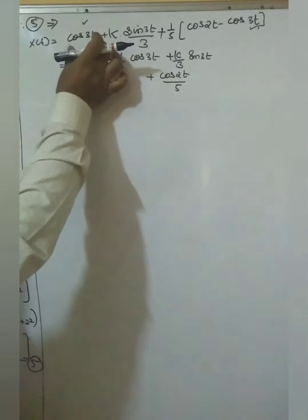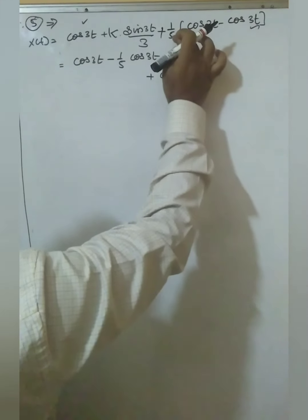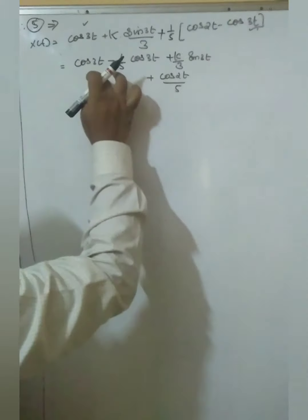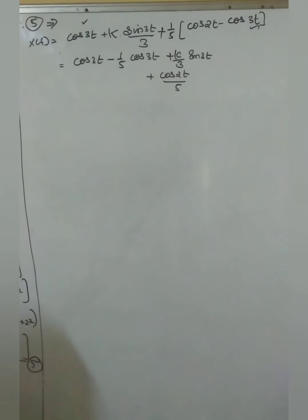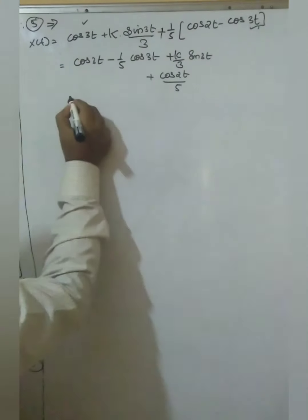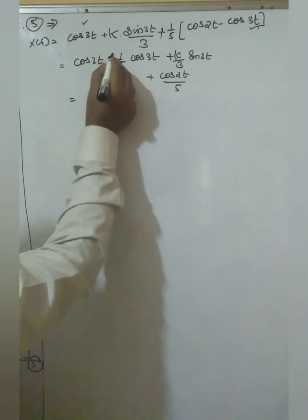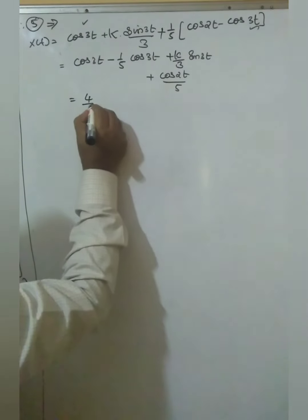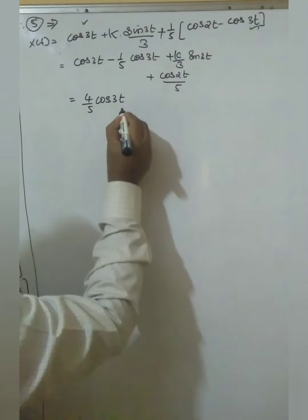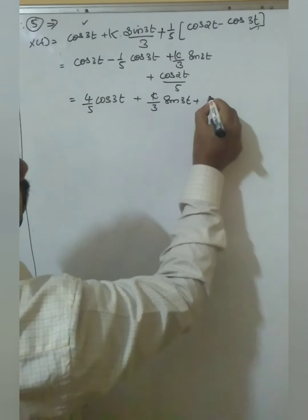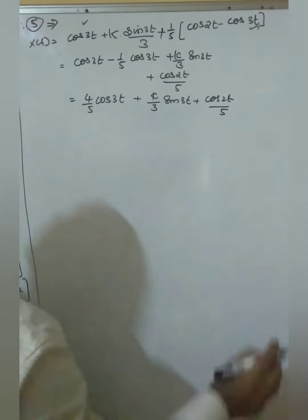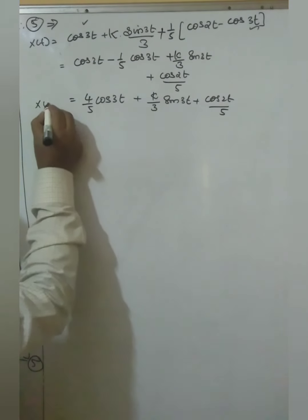Arranging the terms: collecting cos 3t, we have cos 3t minus (1/5)cos 3t, which gives (4/5)cos 3t. So x(t) equals (4/5)cos 3t plus (k/3)sin 3t plus cos 2t over 5.